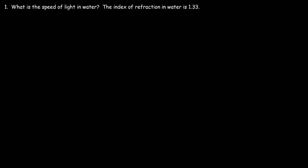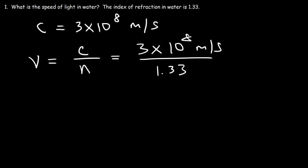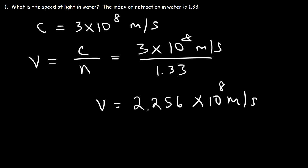What is the speed of light in water? First, you need to know the speed of light in a vacuum, or in empty space, and that's 3 times 10 to the 8 meters per second. The speed of light in a material is equal to the speed of light in a vacuum divided by the index of refraction. The index of refraction for water is 1.33, so if we take 3 and divide it by 1.33, that's equal to 2.256 times 10 to the 8 meters per second. So this is the speed of light in water.